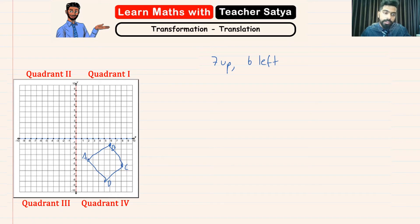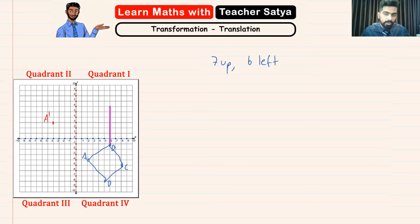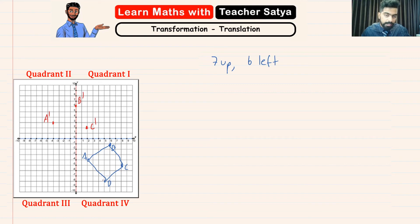Starting with point A, going 7 up and then 6 left, our new point A prime is right here. We do the same for B — 7 up and 6 left — giving us B prime. Then C prime is found by going 7 up and 6 left. And finally D prime is also 7 up and 6 left. If we join the dots, the image looks like this. And that is how we translate images.